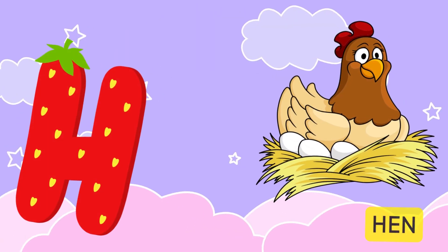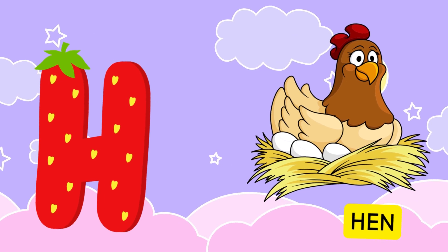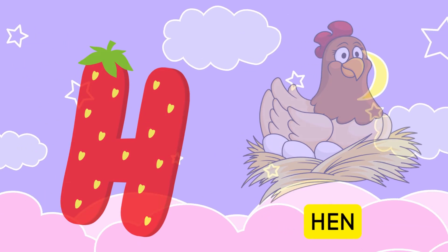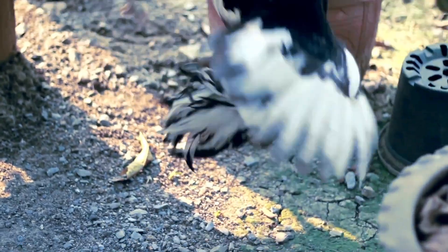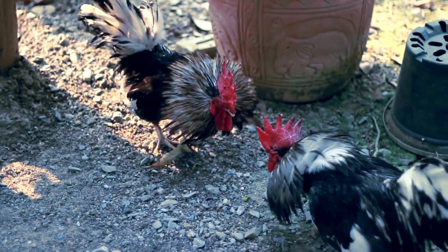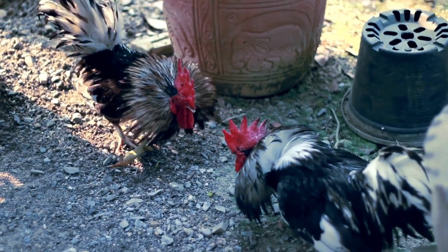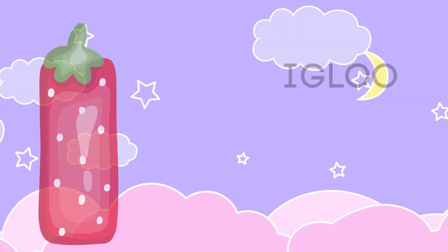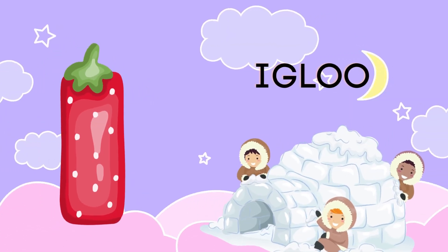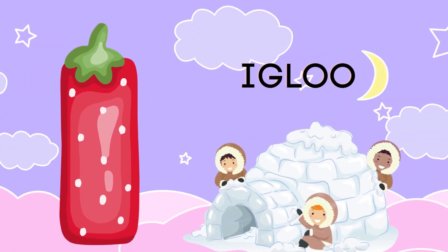H is for hand, a-a-hand. I is for igloo, i-i-igloo.